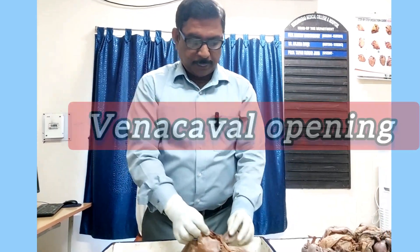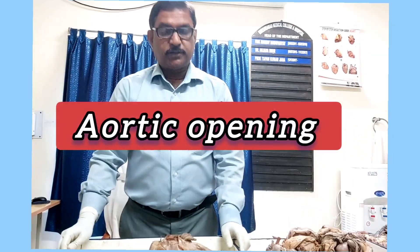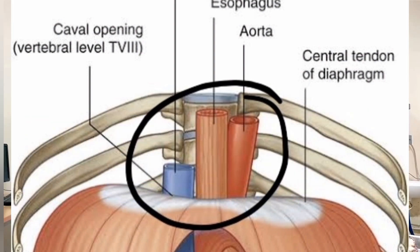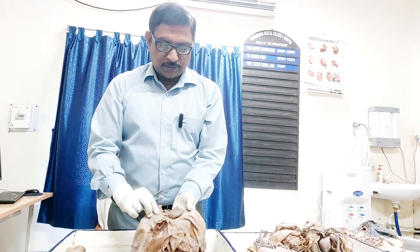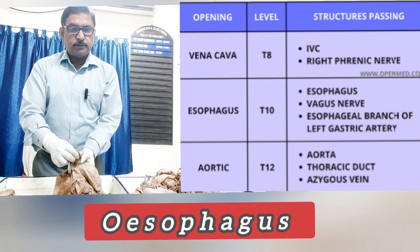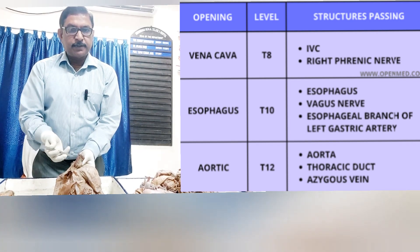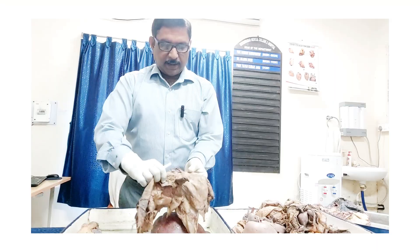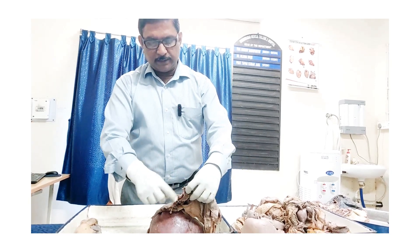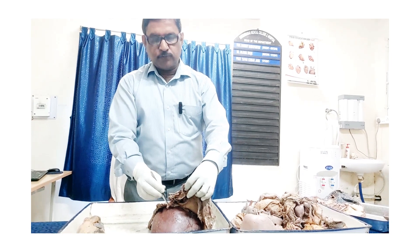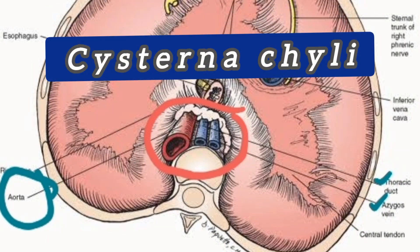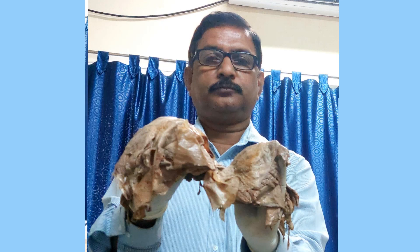There are three major openings of the diaphragm. Structures passing through the vena cava opening: the inferior vena cava, along with the right phrenic nerve or its branches and some lymph vessels. Structures through the esophageal opening: the esophagus, the right vagus nerve, the left vagus nerve, the left gastric artery, some lymph vessels, and the phrenicoesophageal ligament. And through the aortic opening, though it is not a true opening of the diaphragm: the aorta, the azygos vein, and the cisterna chyli which becomes the thoracic duct in the thorax.